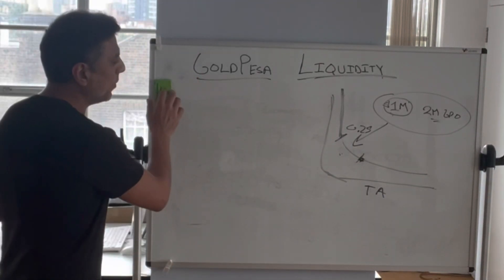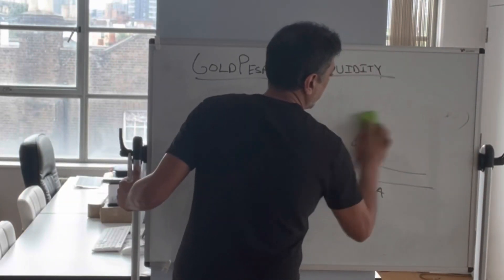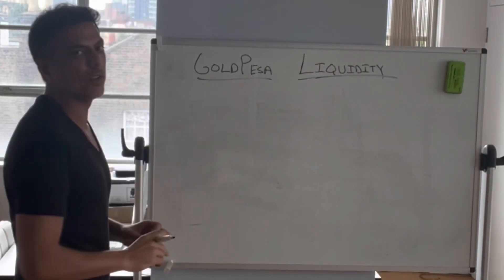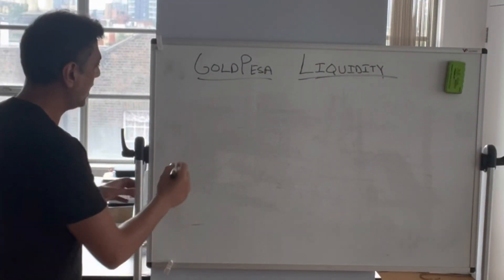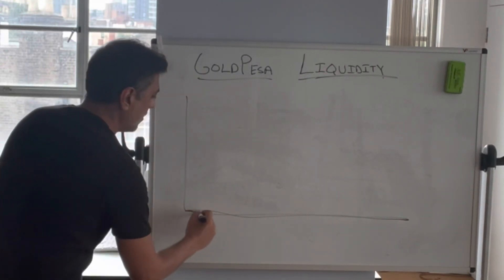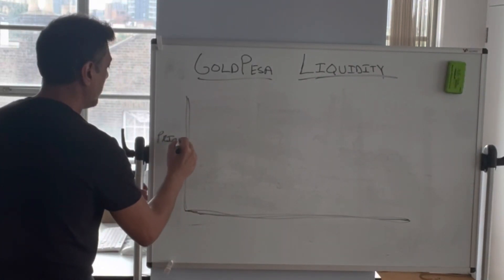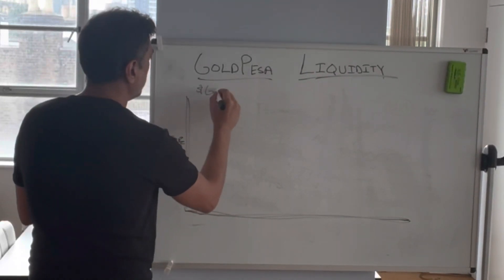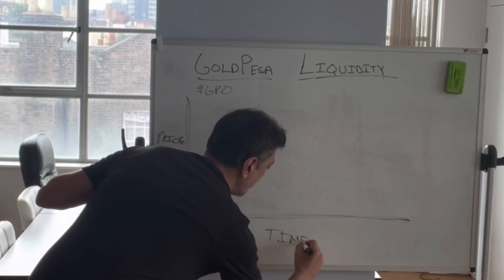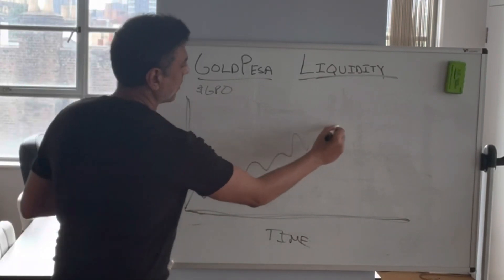So naturally, we are going to think the best thing to do now is to take our $1 million cash that we have. And here's the price chart — price, GPO, time — so we are trying to get some curve like this. We know it's going to go like this.